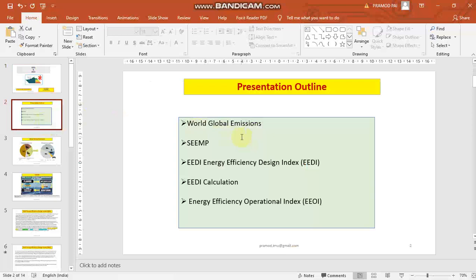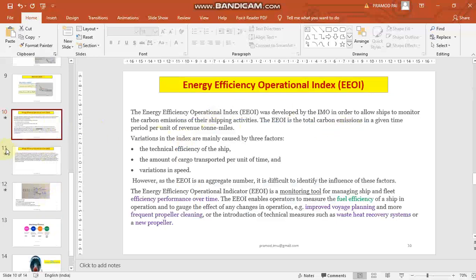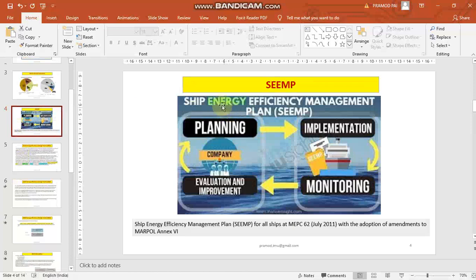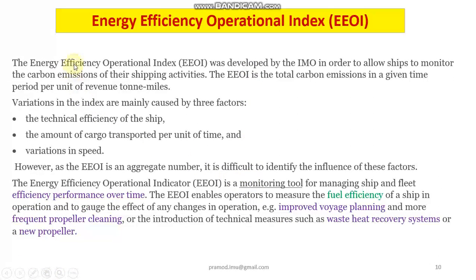We have already started our discussion in the previous videos. We have discussed about world global emissions, the Ship Energy Efficiency Management Plan, and we have also looked into the importance of EEDI and the way it is calculated. Today, let us go into the discussion of Energy Efficiency Operating Index. Every ship is supposed to have a Ship Energy Efficiency Management Plan — SEEMP — as per MARPOL Annex 6. This energy efficiency management plan is a step to reduce the loss of energy and improve the efficiency of energy utilization on ships, achieved through the Energy Efficiency Operating Index measurement.